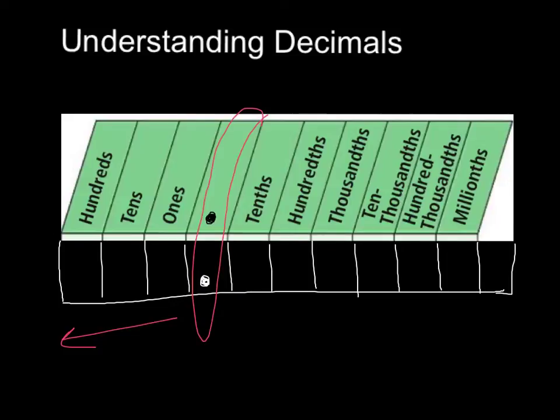Those numbers will be important for when we get to the decimal place values to the right, because you'll notice the names are pretty much exactly the same. The difference with the decimal values is they add this THS onto the end of each place value. So if you have a THS at the end, it's going to be to the right of the decimal place.